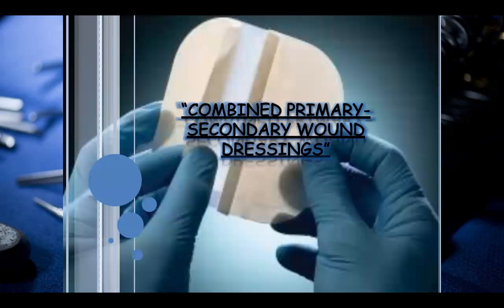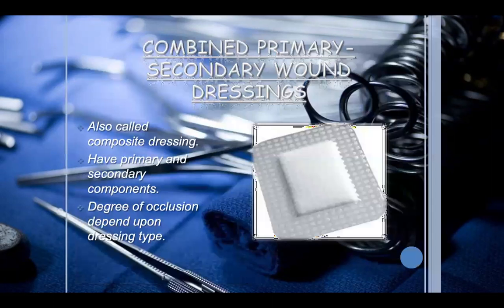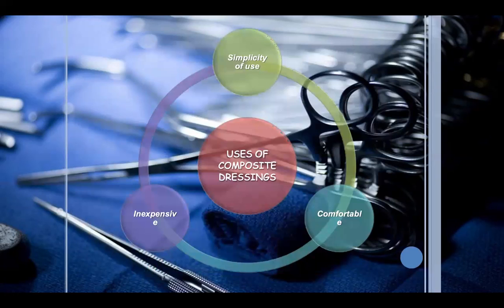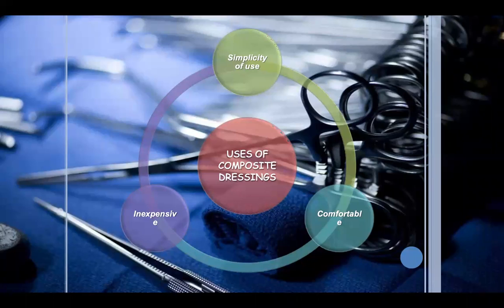Combined primary and secondary wound dressings, also called composite dressings, have primary and secondary components. The degree of occlusion depends on the dressing type. They have bottom, middle, and outermost layers — well-prepared dressings that are simple to use, inexpensive, and comfortable.